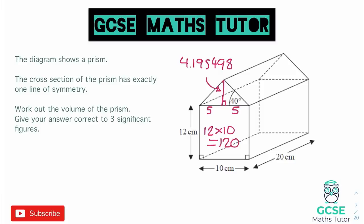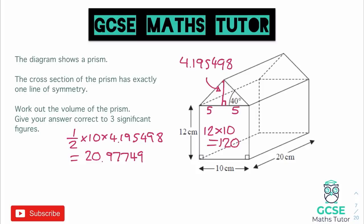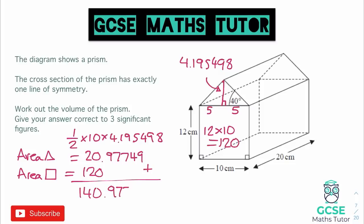Now I can work out the area of the triangle using half base times height. I already know half the base is 5. Writing the full formula: one half times 10 times 4.195498. Typing that into the calculator gives the area of the triangle as 20.97749. Adding that to the rectangle area of 120 gives us the area of the cross section: 140.97749 centimeters squared.